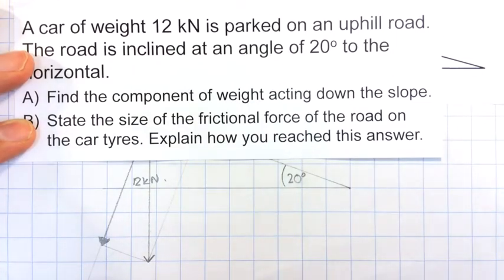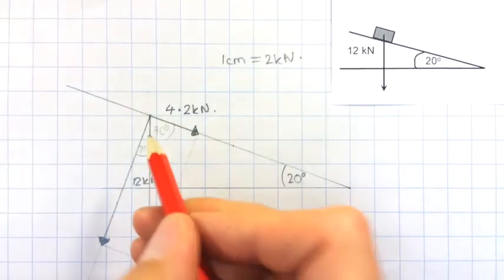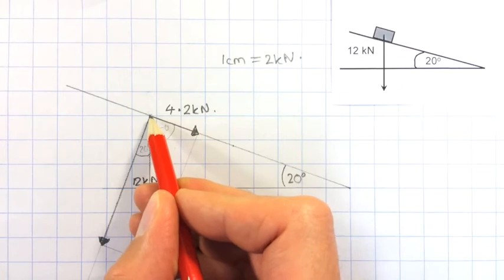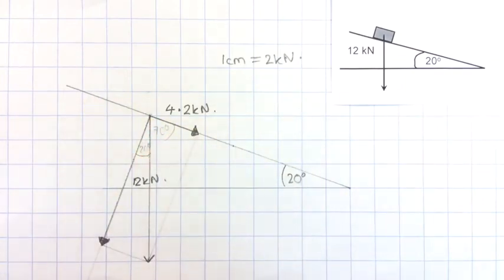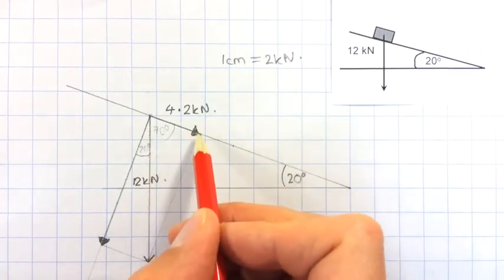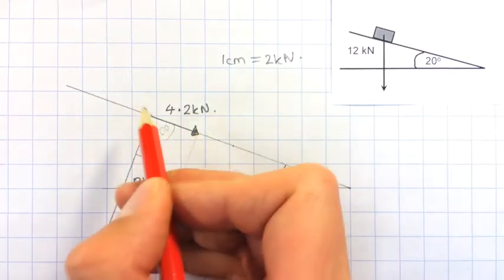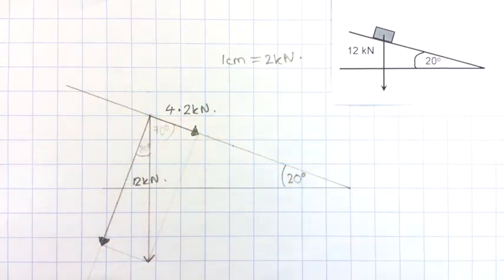Therefore, we can say the resultant force must be 0. And that means that the resultant force up and down the slope must also be 0, which means there must be an equal and opposite 4.2 kN force acting up the slope to balance the component of weight acting down the slope.